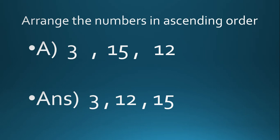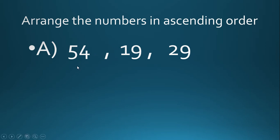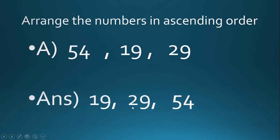Now the second question: arrange 54, 19, and 29 in ascending order. First rule — check the digits. All numbers are two-digit numbers. Second rule — check the tens place. The tens digits are 5, 1, and 2. It is clear that 1 is smaller than 2, and 5 is the biggest. So 19 is the smallest and 54 is the biggest number. The answer is: 19, 29, and 54.